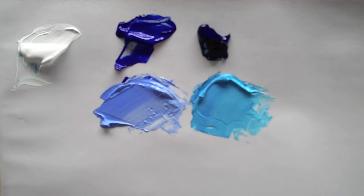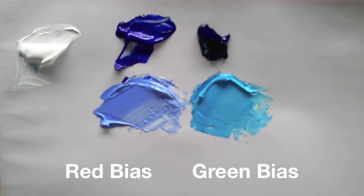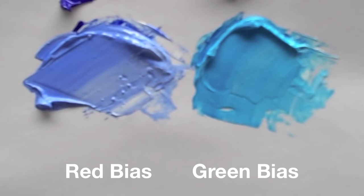So now you can easily see how green the blue on the right is compared to the one on the left. This is just a very quick example of colour bias.